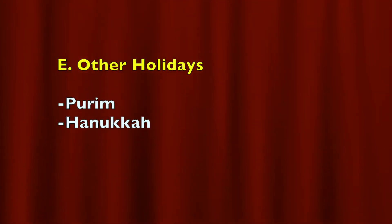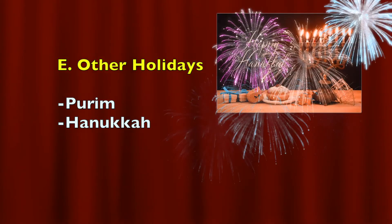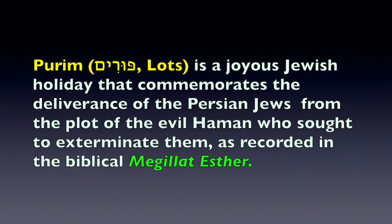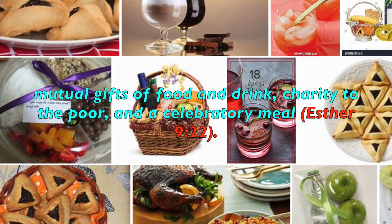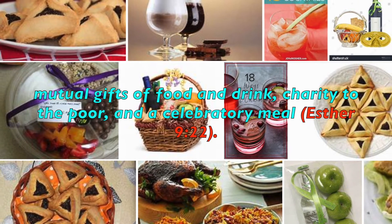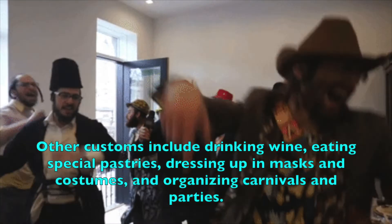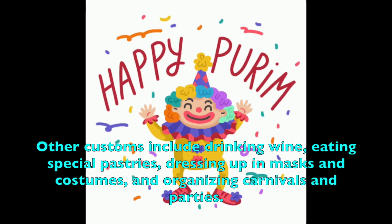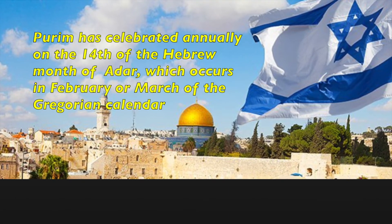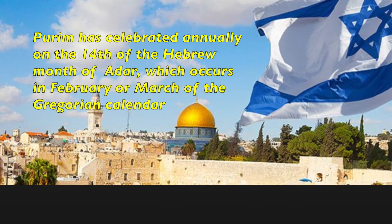There are holidays not mentioned in the Torah but that became part of the history and victory of the Jewish people — called the other holidays, like Purim and Hanukkah. Purim, or Lots in English, is a joyous Jewish holiday commemorating the deliverance of the Persian Jews from the evil Haman, who sought to exterminate them, as recorded in the biblical Megillat Esther. It is characterized by public recitation of the Book of Esther, mutual gifts of food and drink, charity to the poor, and a celebratory meal, as mentioned in Esther 9:22. Purim is celebrated annually on the 14th of Adar, corresponding to February or March.